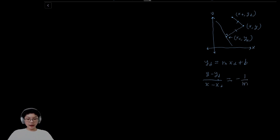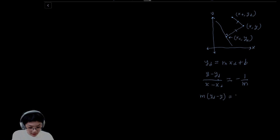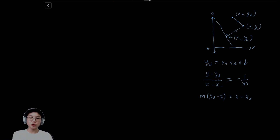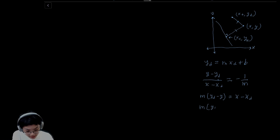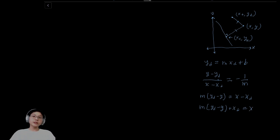Now we can multiply x minus xd to both sides and negative m to both sides. So m times yd minus y is going to be equal to x minus xd. Now we can add xd to both sides, giving us m times yd minus y plus xd equals x. One equation down and one more to go.